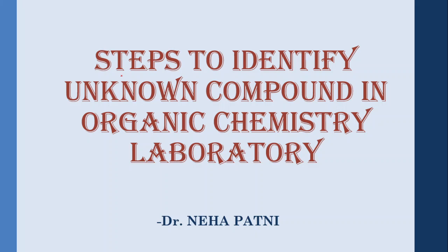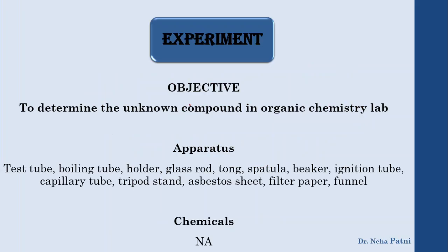Today we are going to see how to identify an unknown compound in an organic chemistry lab. The objective is to determine the unknown compound using apparatus like test tubes, boiling tubes, holders, and glass rods. You can also watch another video to understand the difference between spatula, tongs, asbestos sheet, filter paper, and other lab apparatus.